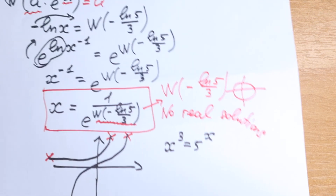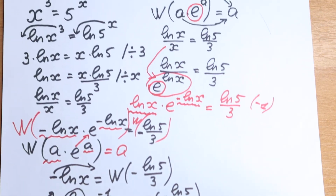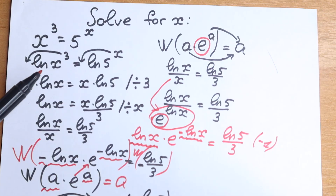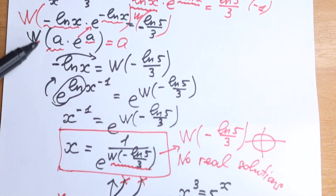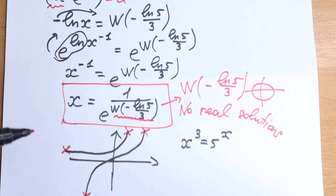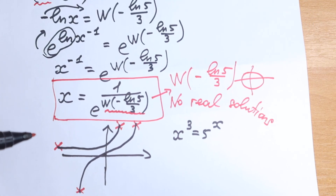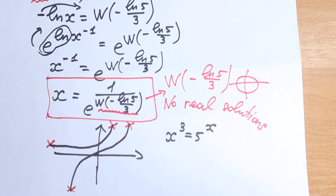I hope you understand this explanation — three steps: first step, natural log; second step, Lambert W function; and the third step, using e and the log property. So we solved this question. Thank you for watching, I wish you all the best in your mathematics adventure, thank you for your time and have a great day — see you in the next videos.